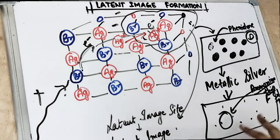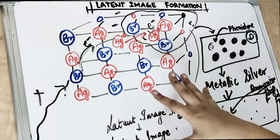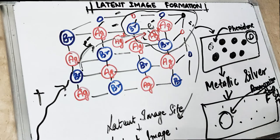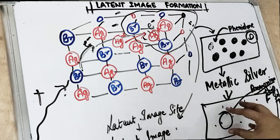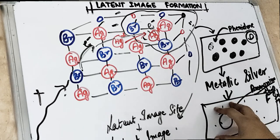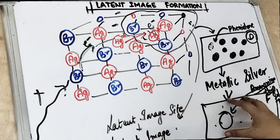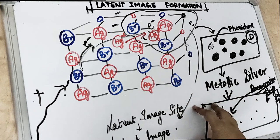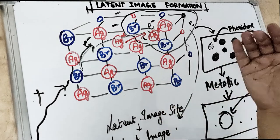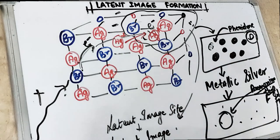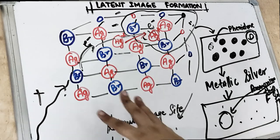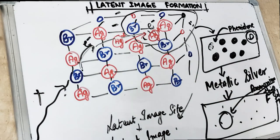The ammonium thiosulphate in the fixer combines with the silver halide crystals which are not exposed, forms silver thiocyanate, and once it is washed with water, the silver thiocyanate — and therefore the silver — is washed out. This is how the latent image is formed.